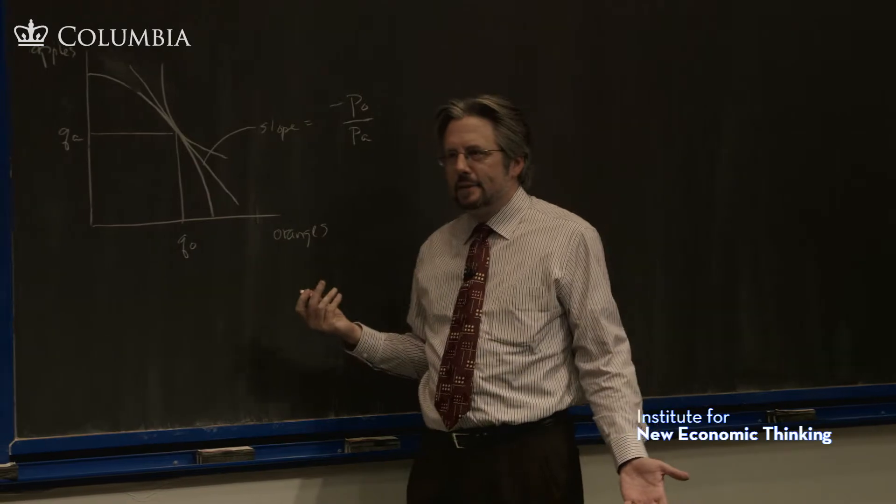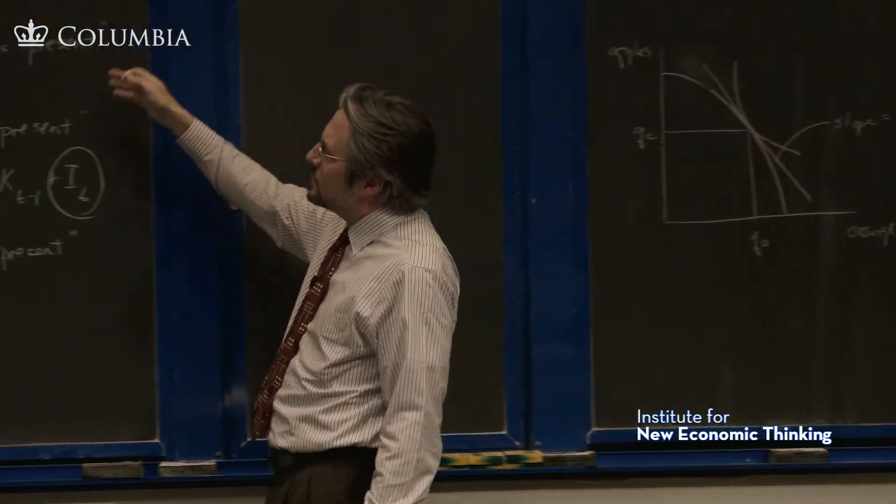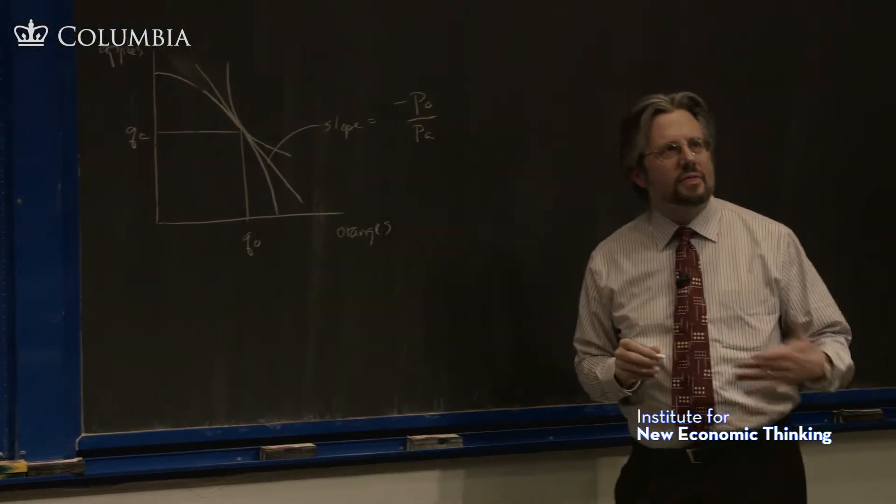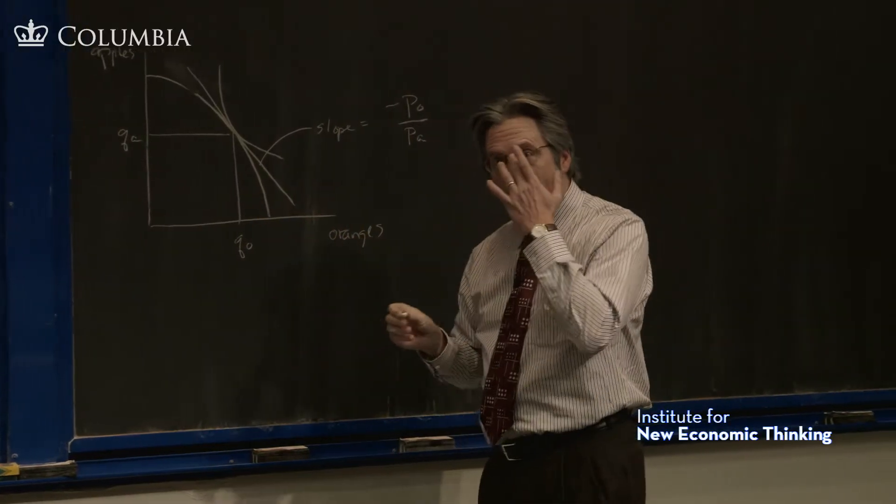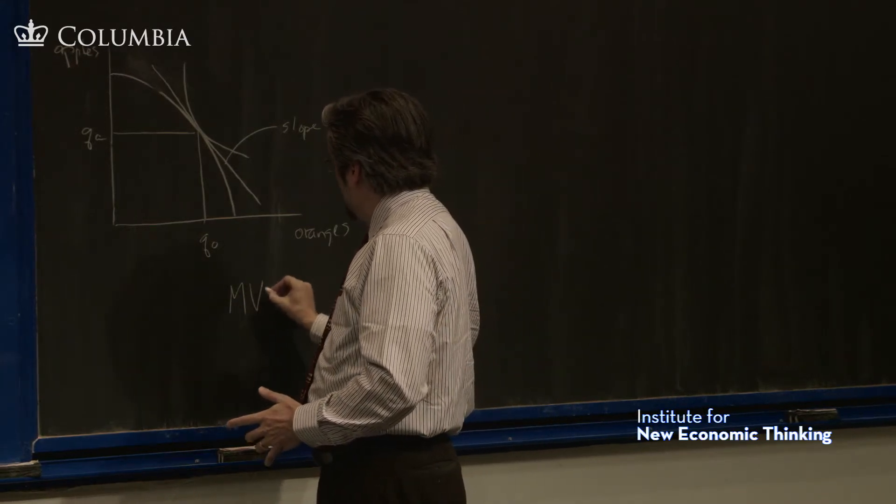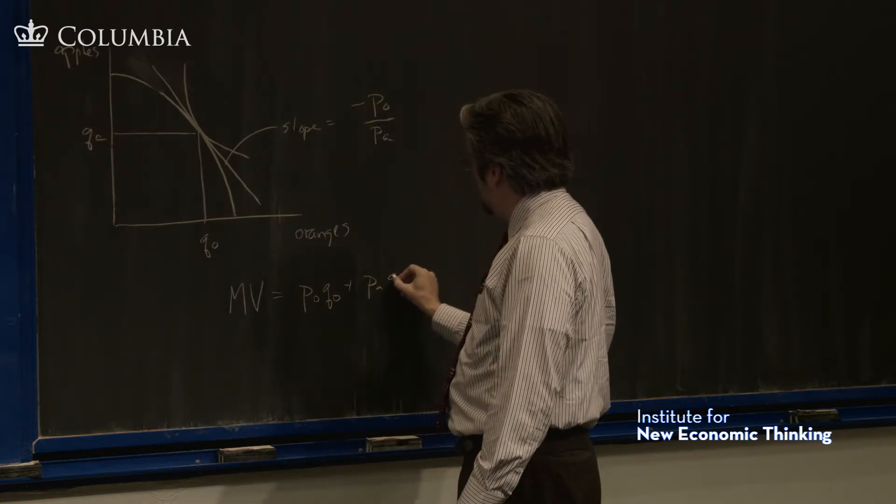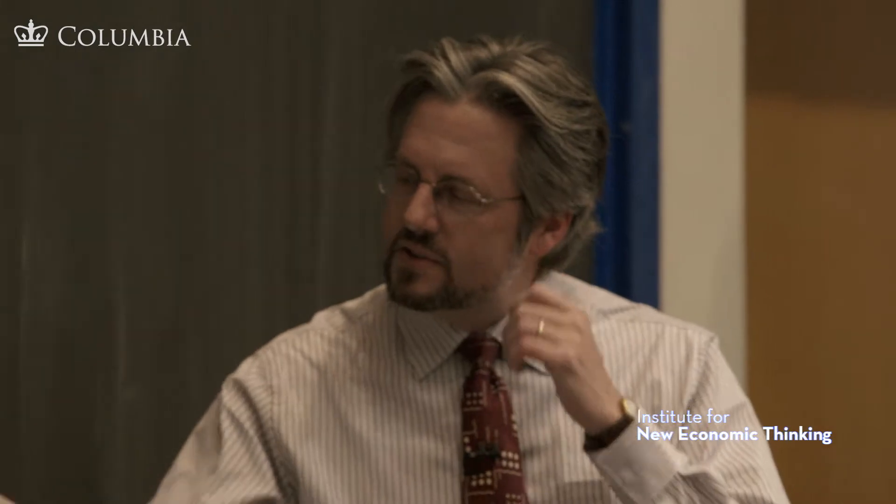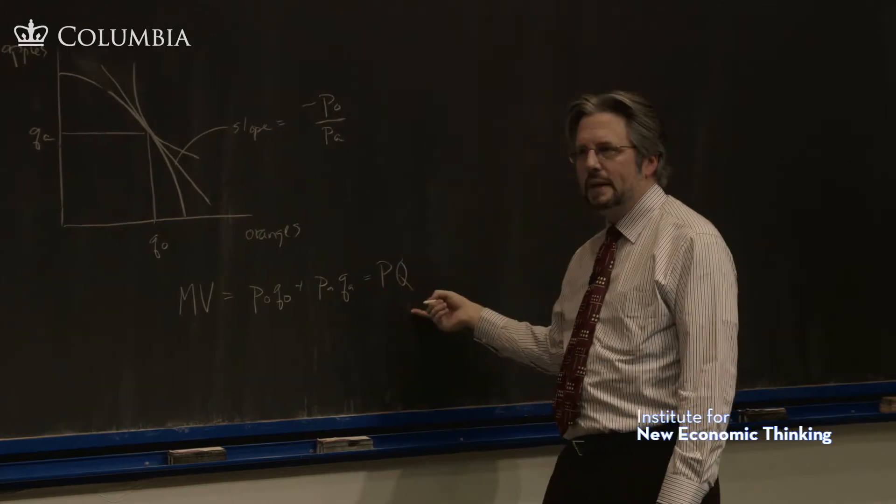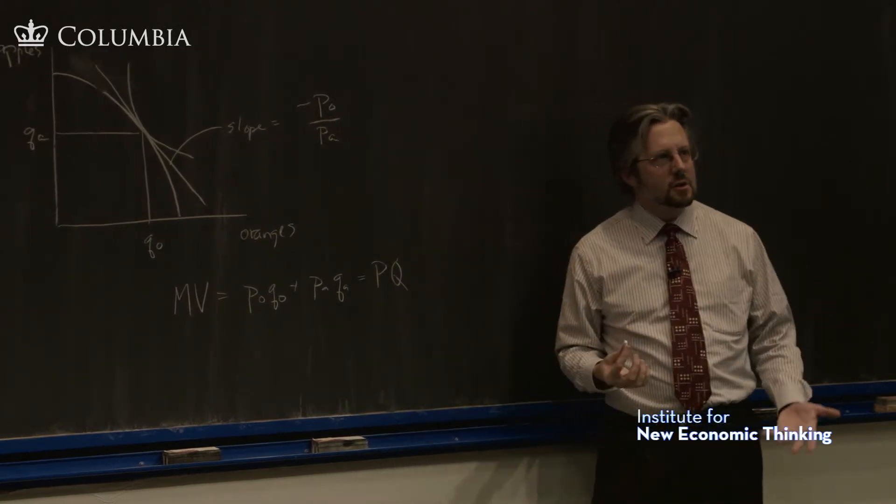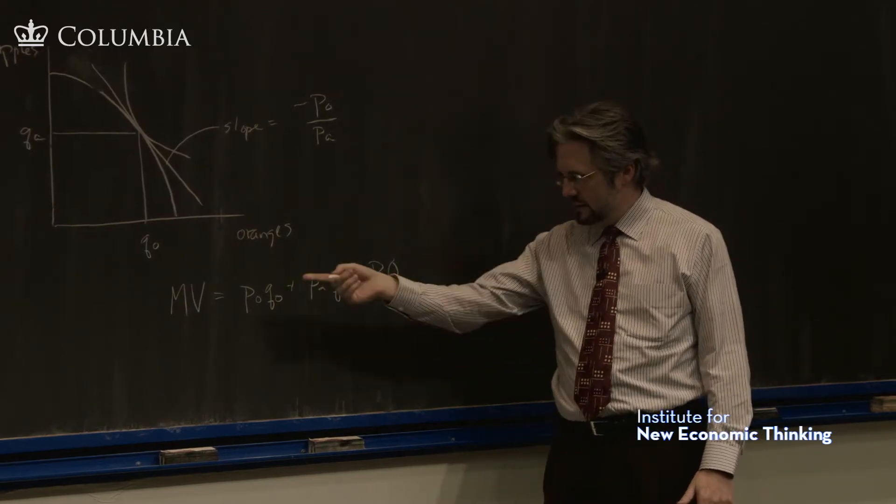So what have economists done? What they essentially do, and this connects up to what I was saying about the money view being at a sort of distance, they sort of paste on a theory of money and the price level, and that's the quantity theory of money. So using the idea that these transactions have to be made using money, let's just say MV equals P.O. Q.O. plus P.A. Q.A. So there's these nominal transactions that have to be made. We can call that MV equals P.Q. So this is the quantity theory of determination of the price level, if we read this from left to right.